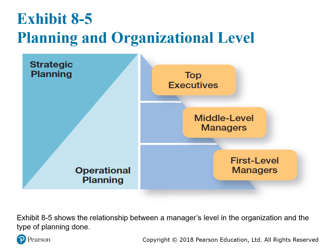Across organizational levels, strategic planning is more relevant to top executives, as it covers the entire organization. Operational planning is more a task for first-line or lower-level managers, covering specific functions like sales, human resources, or manufacturing. This provides a visual representation of how planning differs across the organizational hierarchy.